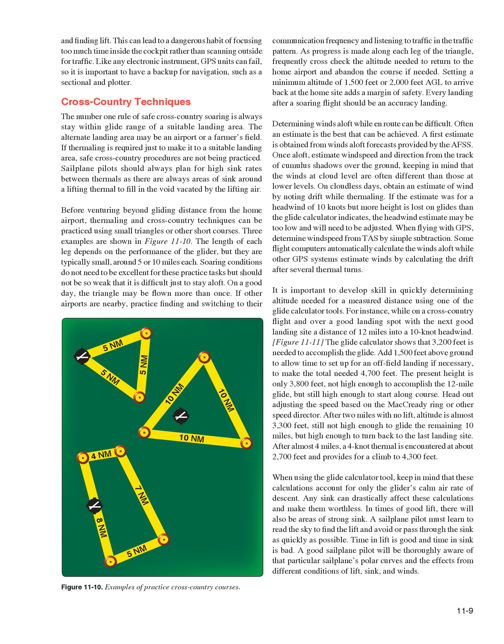It is important to develop skill in quickly determining altitude needed for a measured distance. For example, while over a good landing spot with the next landing site 12 miles away into a 10-knot headwind, the glide calculator shows 3,200 feet needed. Adding 1,500 feet AGL to allow time to set up for an off-field landing makes the total needed 4,700 feet. If present height is only 3,800 feet, not high enough for the 12-mile glide, head out while adjusting speed based on the McCready ring. After 4 miles, a 4-knot thermal at about 2,700 feet provides a climb to 4,300 feet.